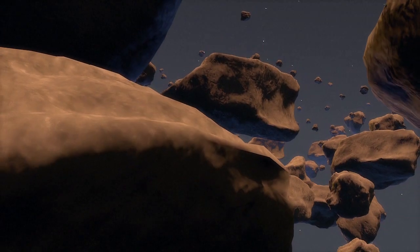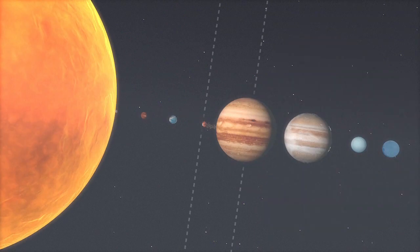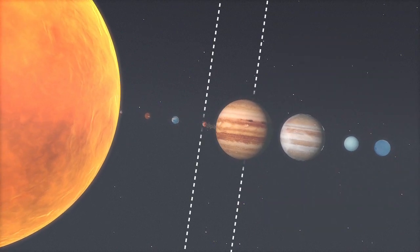Meteorites are mostly fragments of asteroids that gravitate between Mars and Jupiter. Some are particularly rare, from the Moon or even Mars.